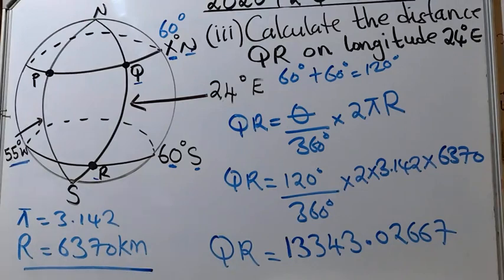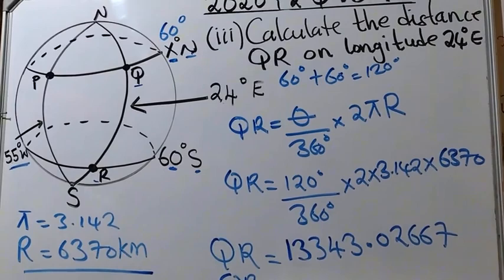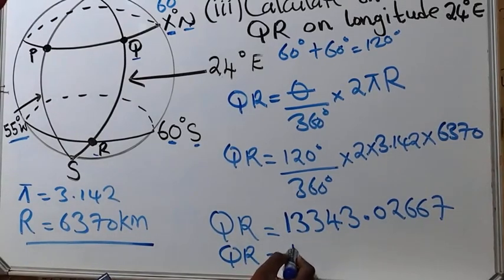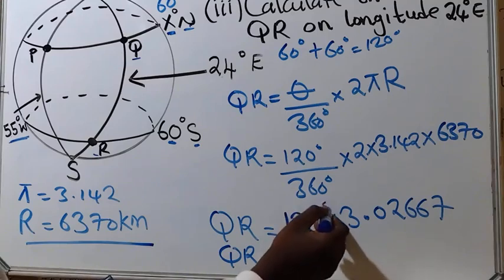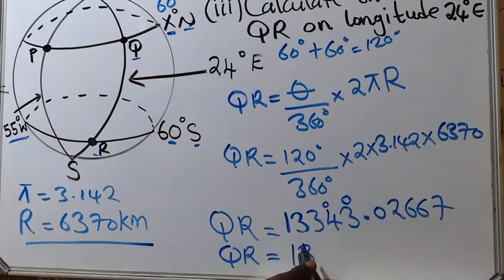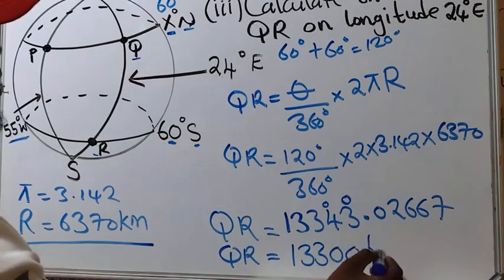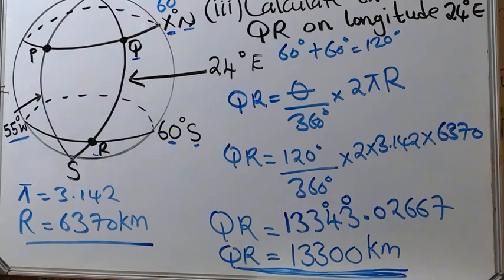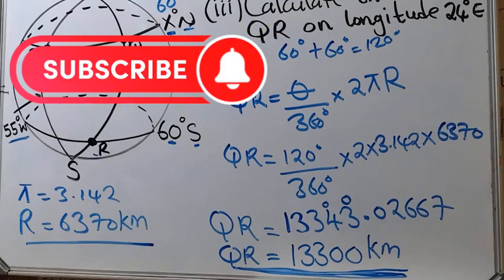Rounding to three significant figures: 13,343.02667 becomes 13,300 kilometers. Therefore, the distance QR is 13,300 kilometers. Thank you so much for watching. Don't forget to subscribe to this YouTube channel and invite your friends to come and learn.